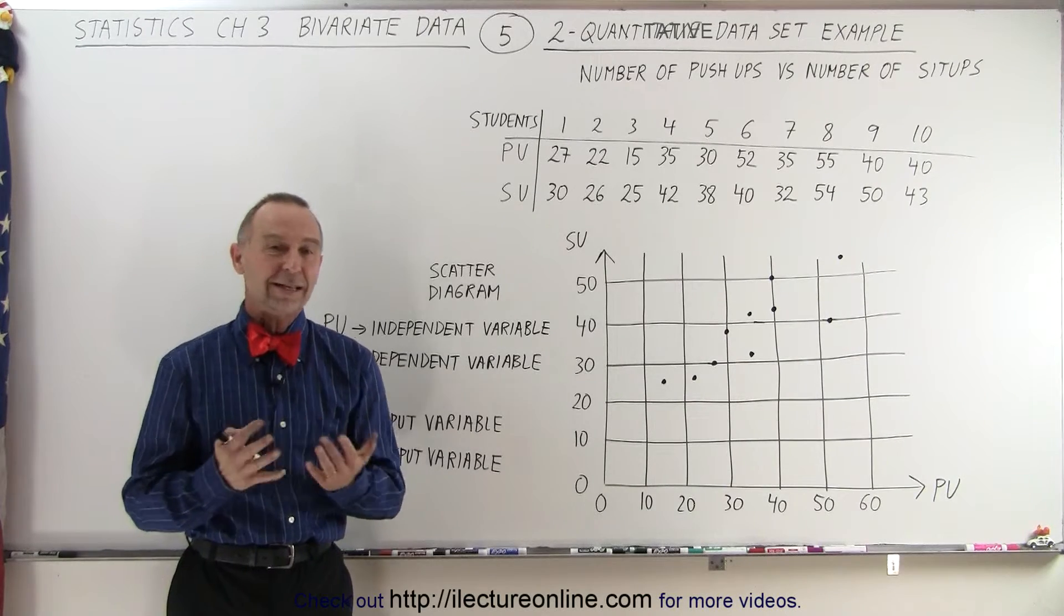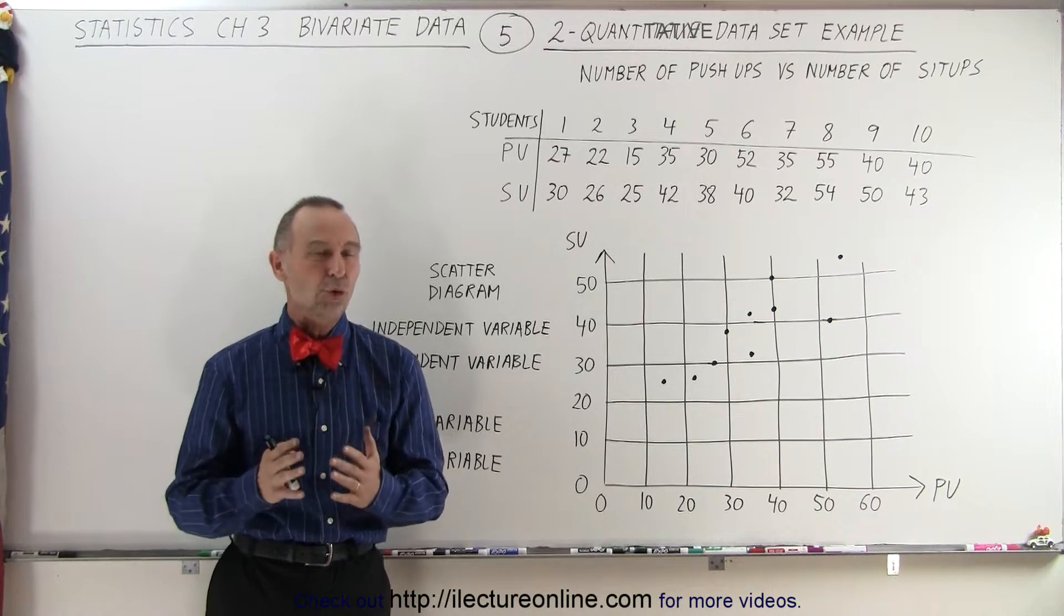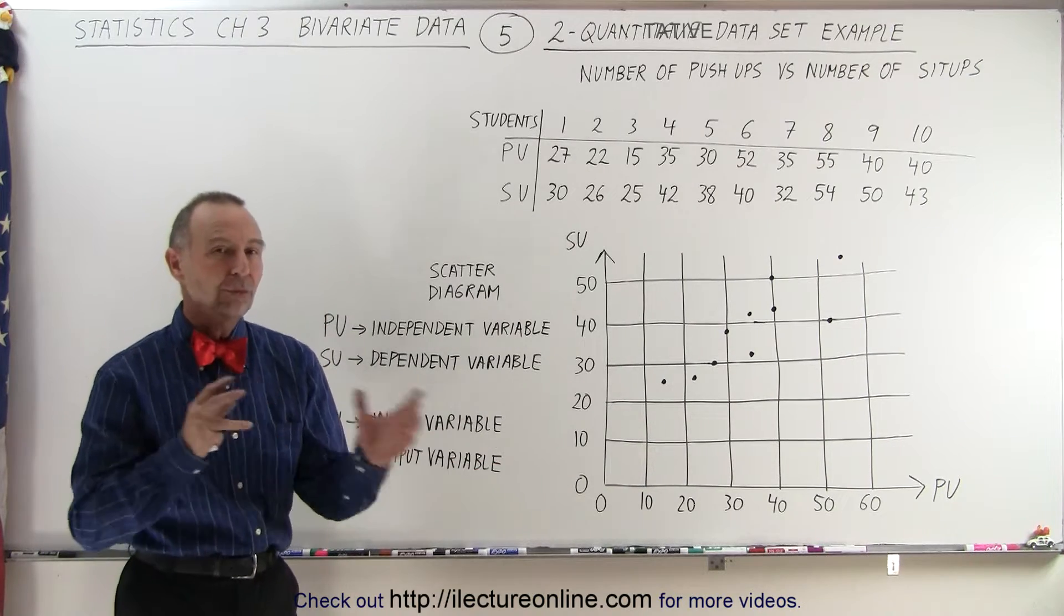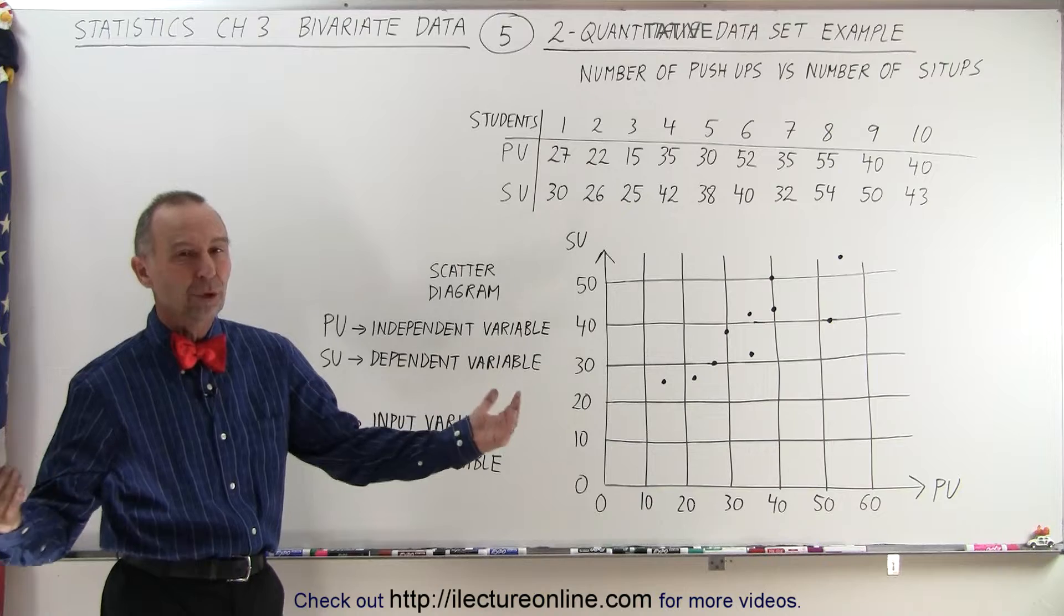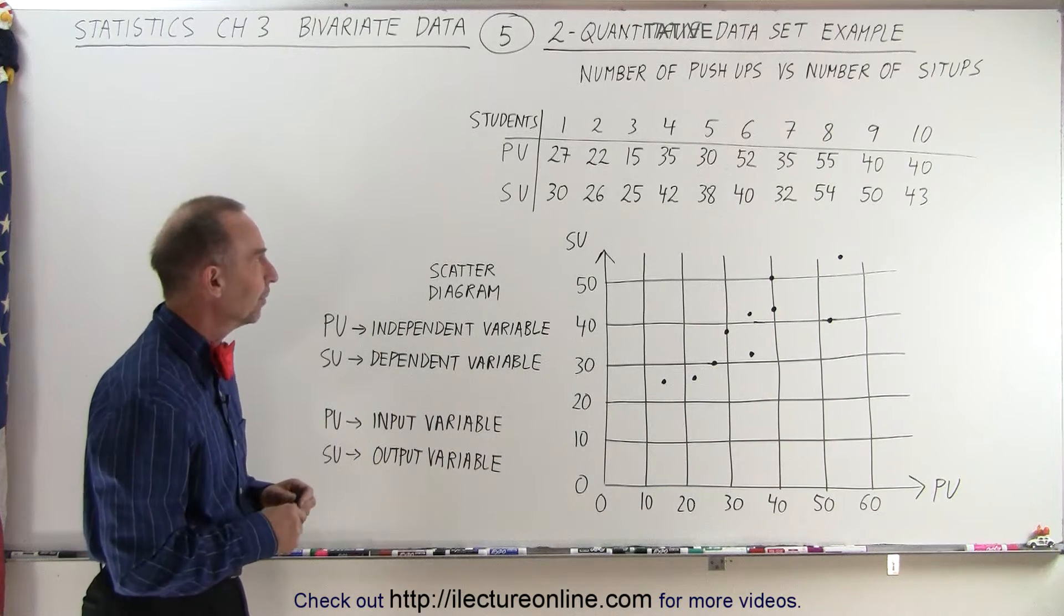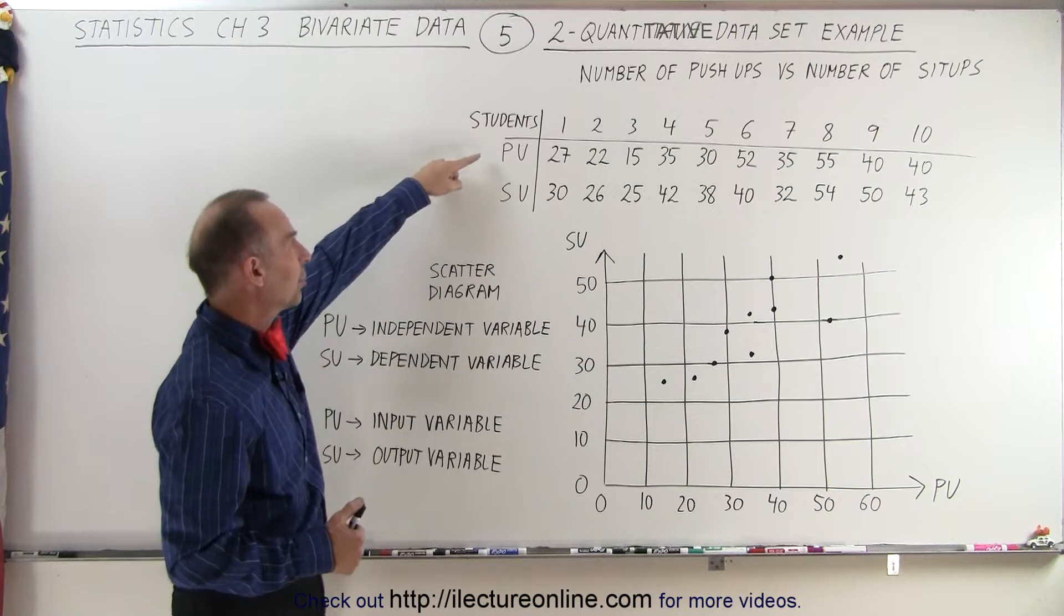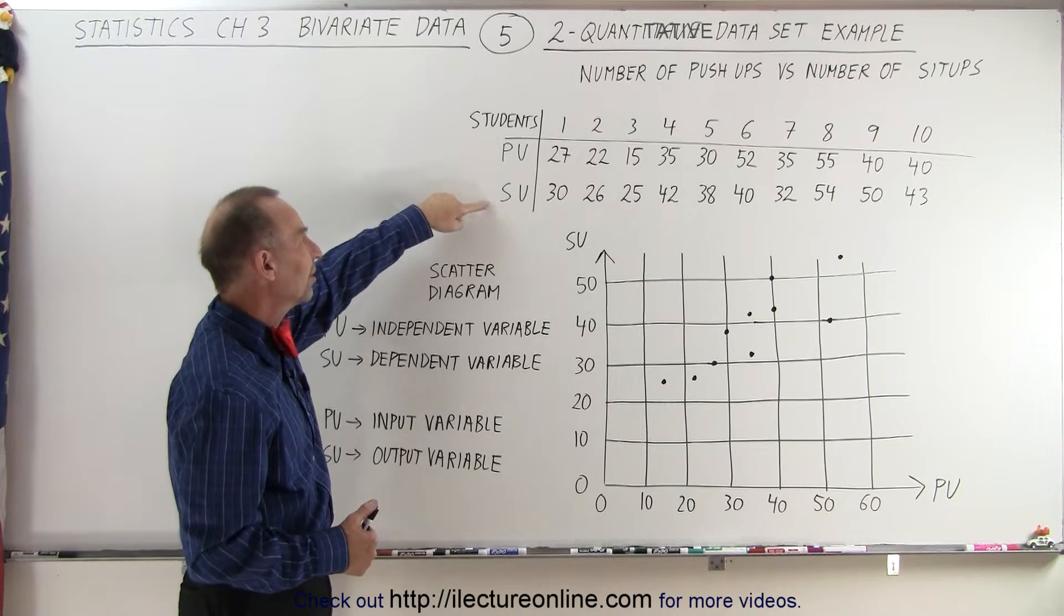Welcome to Y Lecture Online. Our next example is a two quantitative data set. In other words, both data sets contain numbers and we're comparing numbers to one another. In this case, we're taking 10 students. We have them see how many push-ups they can do and see how many sit-ups they can do.